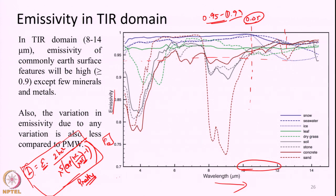In the Rayleigh-Jeans regime applicable to passive microwave radiometry, the radiance is proportional to a constant (2hc/λ⁴) multiplied by emissivity × T. So here the radiance is a direct product of emissivity and temperature. Emissivity gets almost equal weightage with temperature in controlling radiance, and furthermore emissivity of features varies a lot in passive microwave — making it easier to focus on emissivity.